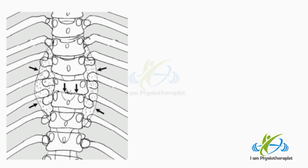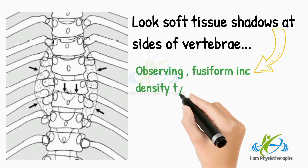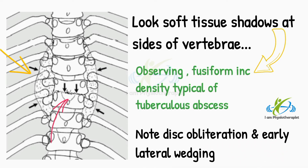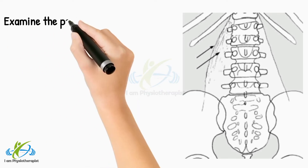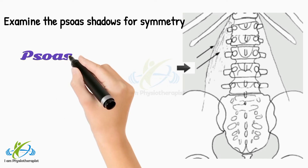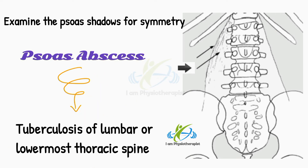Look at the soft tissue shadows at the sides of the vertebrae, observing the fusiform increased density typical of a tuberculous abscess. Note disc obliteration and early lateral wedging. Examine the psoas shadows for symmetry. Lateral displacement of the edge of the shadow and increased density within the area occupied by the psoas suggests a psoas abscess, typically found in tuberculosis of the lumbar or lowermost thoracic spine.